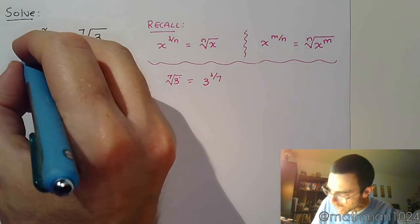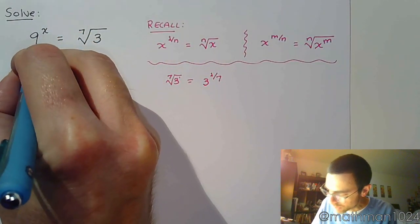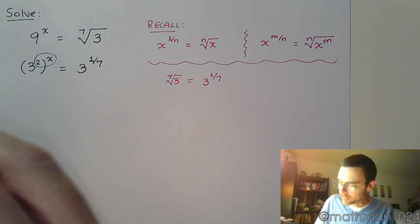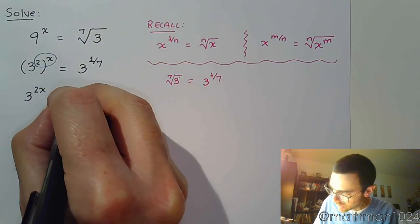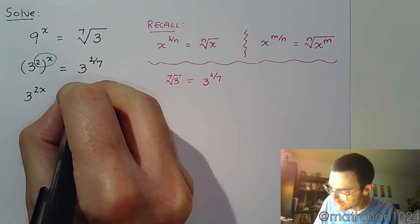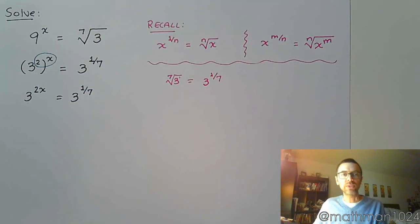All right. Well, as we were showing before, a power to a power means we're going to take these powers and multiply them. So we end up with 3 to the 2x is equal to 3 to the 1/7.